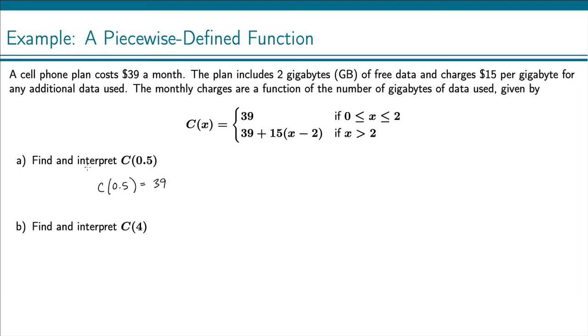Now to interpret this, we know that our x values represent the amount of data used, the number of gigabytes of data used. And so this says that if you use half a gigabyte of data, your cost is $39. Now that makes sense here because the cell phone plan costs $39 a month and that plan includes 2 gigabytes of data.